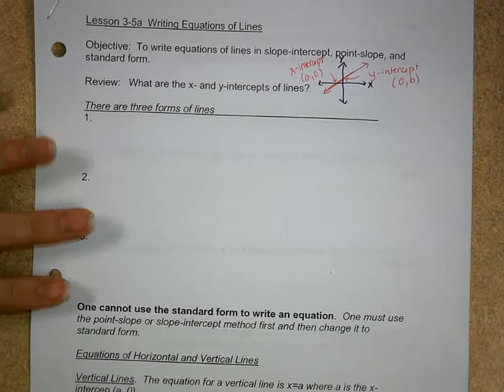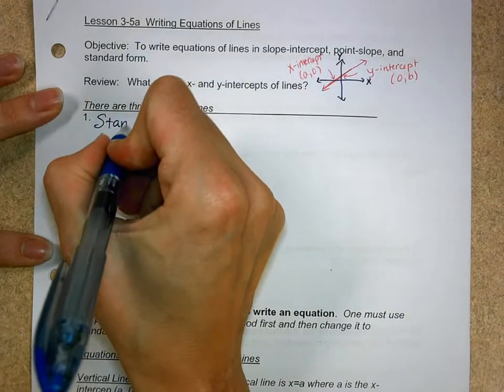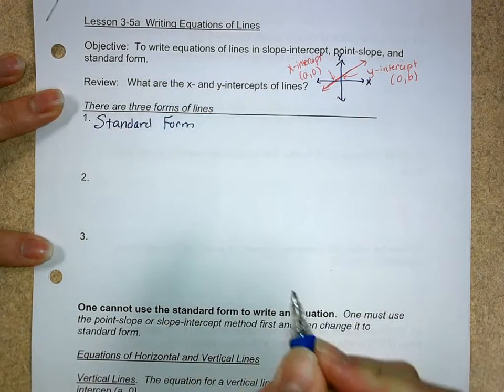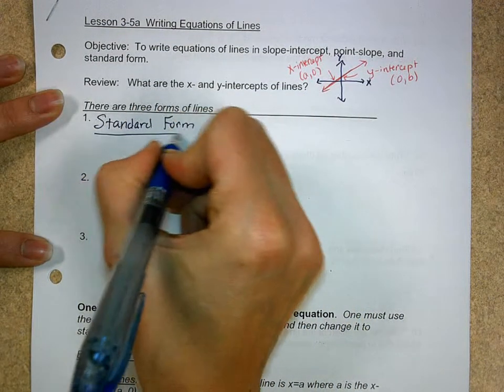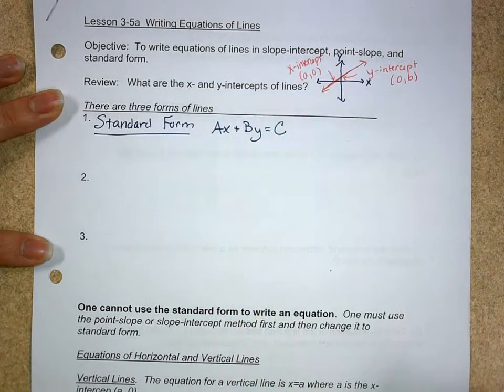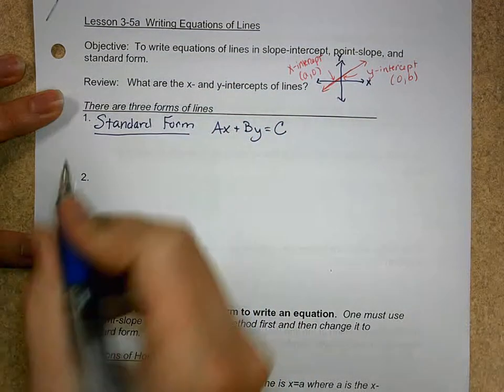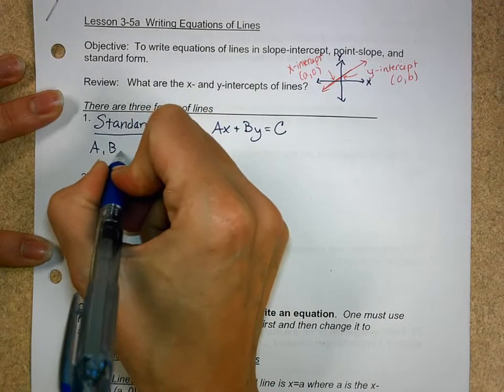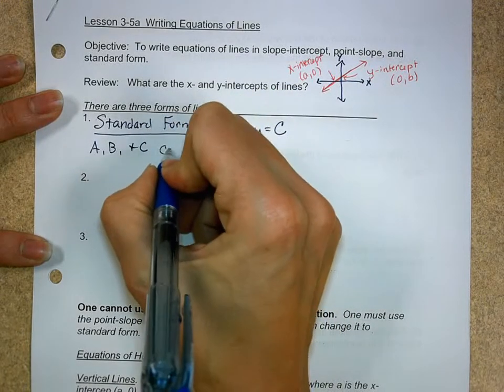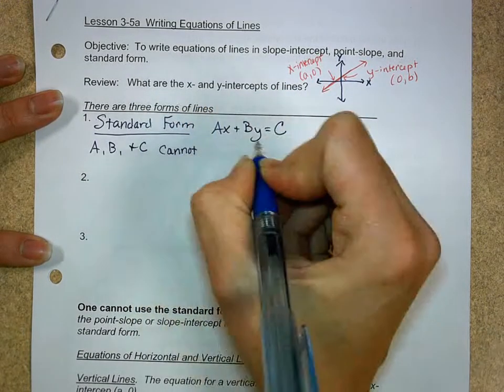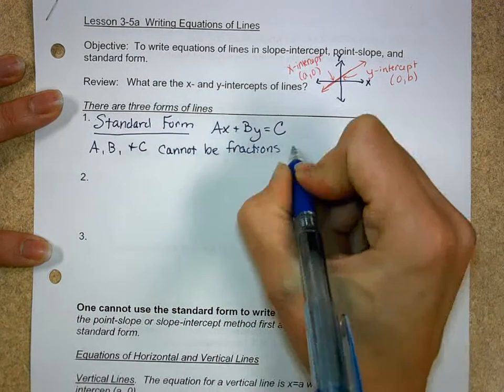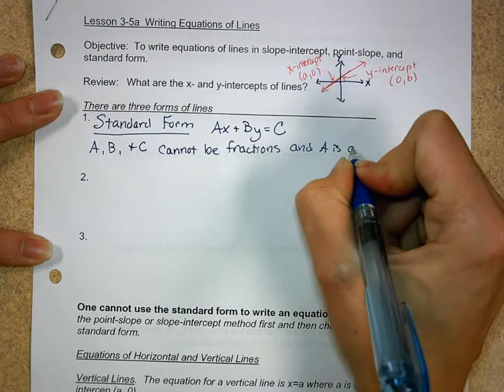Well, the first form of a line that we talk about is standard. Now, it's not the most common form in the sense of being used, but we have it around all the time. The standard form is the following: Ax + By = C. Now, here's a few rules. A, B, and C cannot be fractions. They have to be integers.